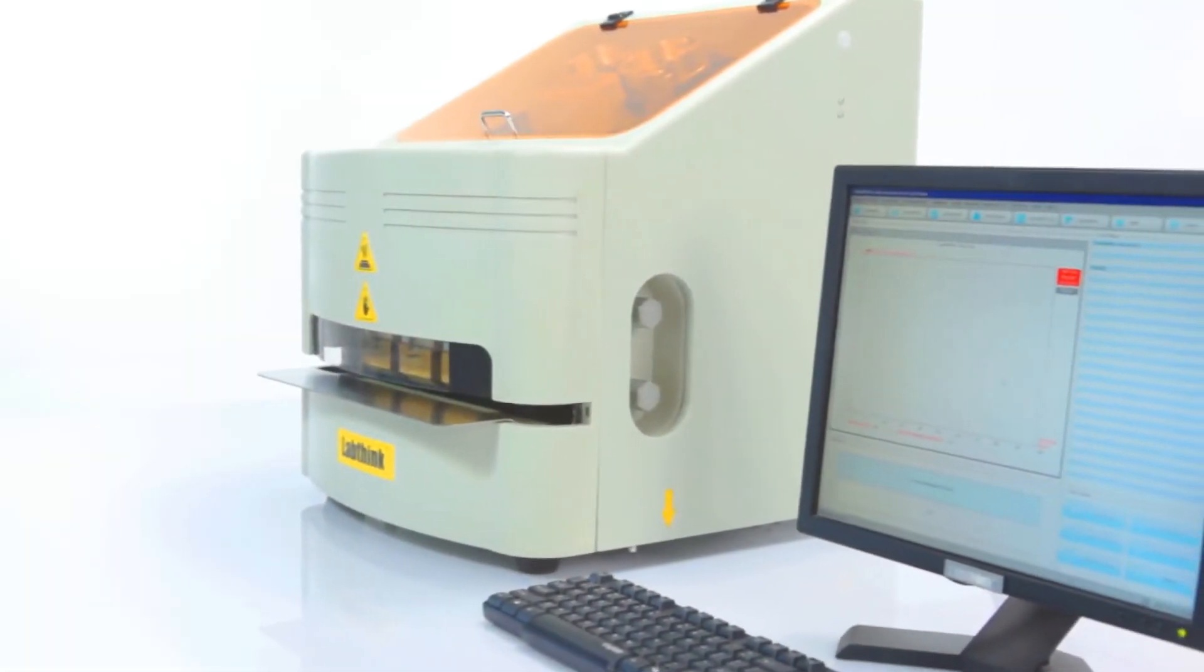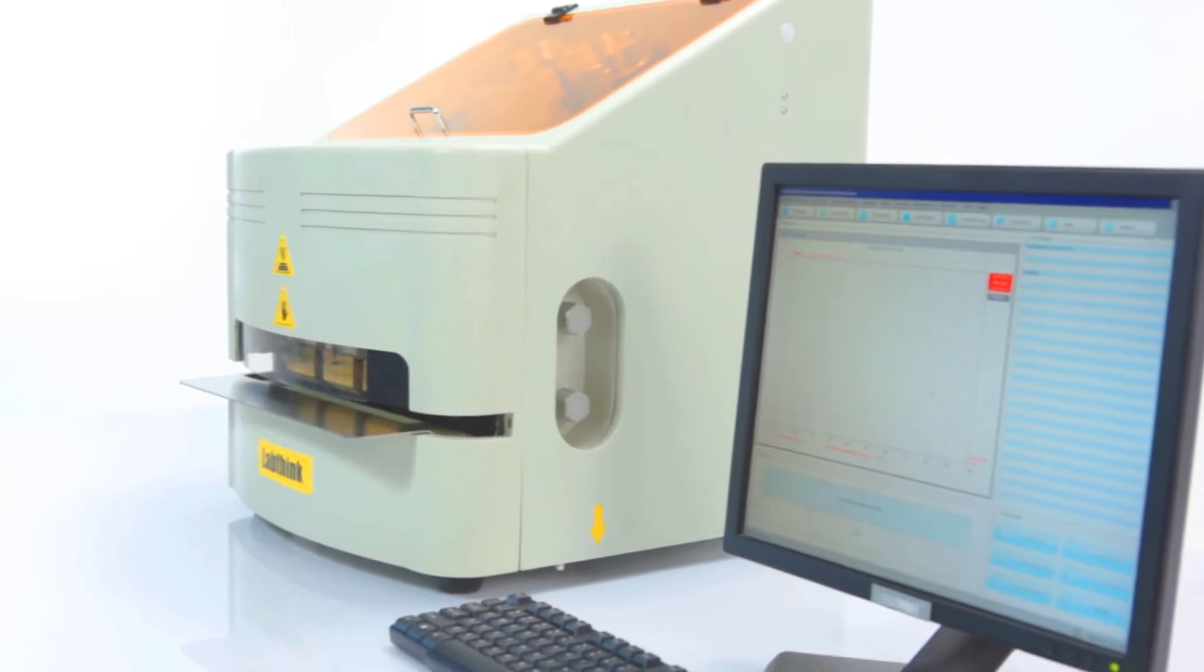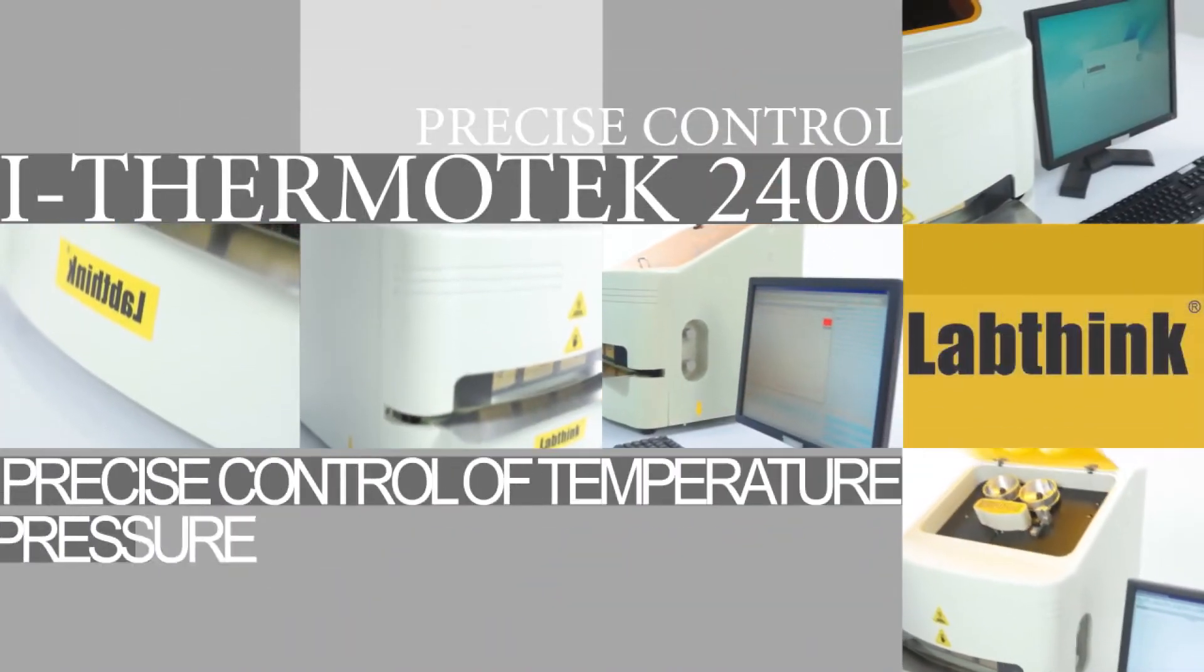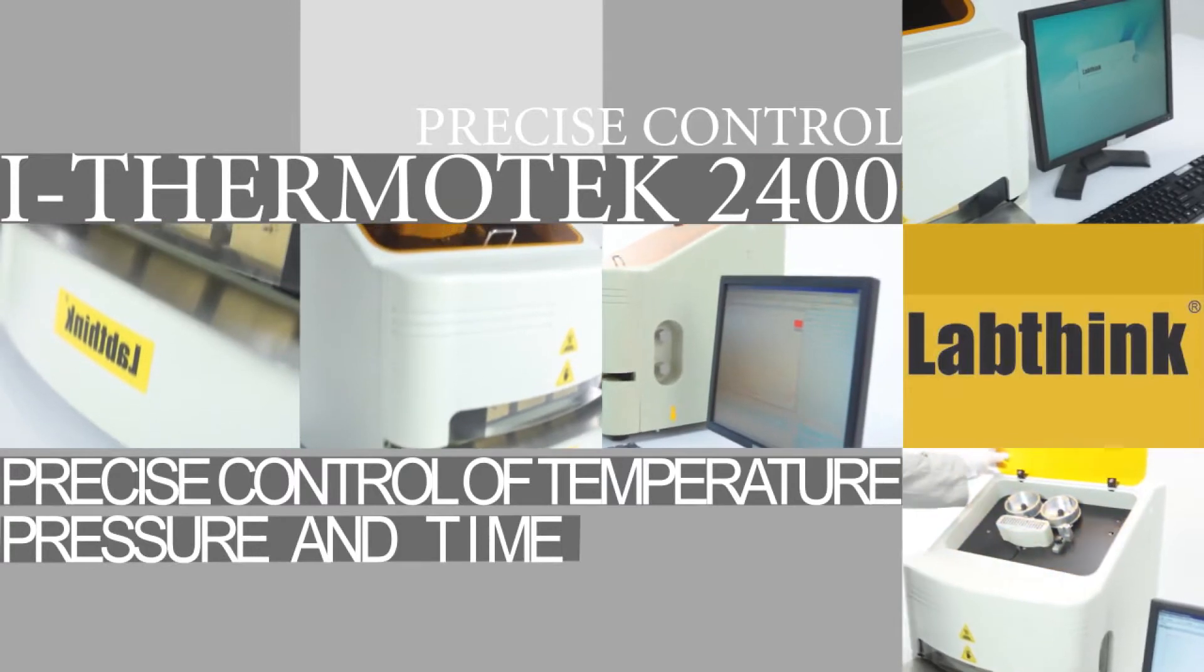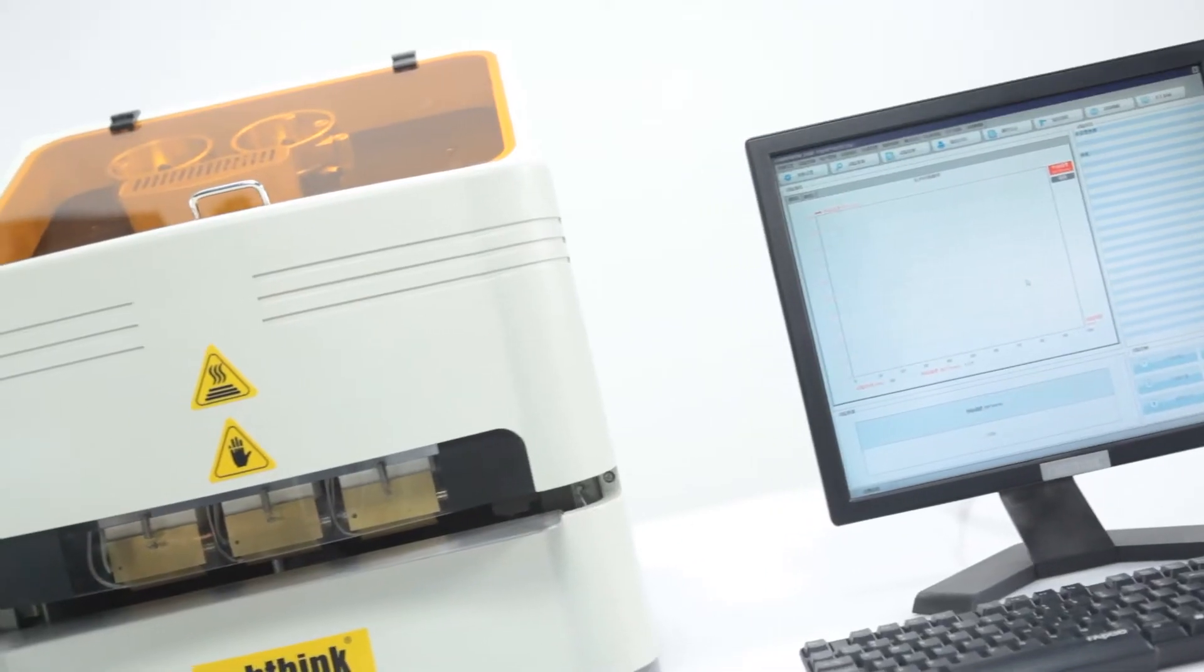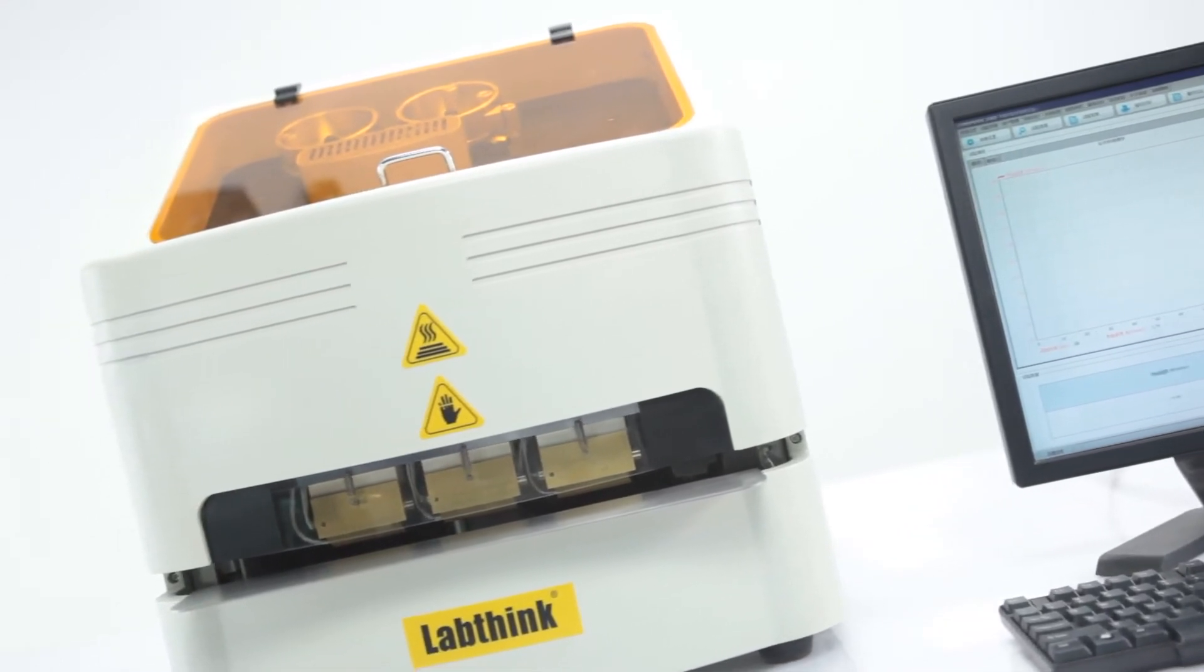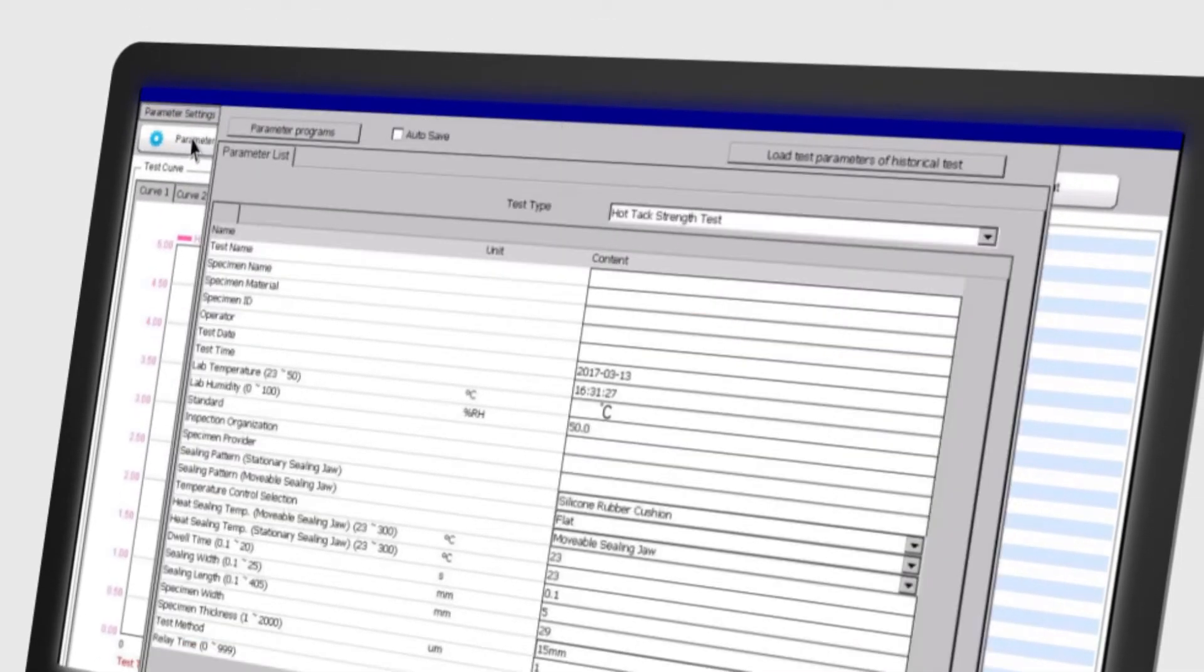i-Thermotech 2400 provides a wide range and precise control of temperature, pressure and time. Owing to its featured PID temperature control system with self-tuning and self-adaption functions, temperature can be controlled precisely from room temperature to 250 degrees Celsius with the accuracy up to plus or minus one degrees Celsius.